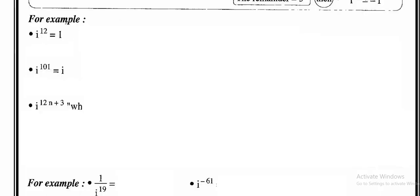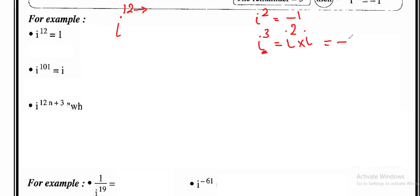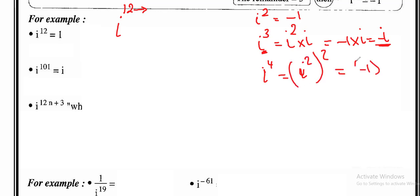If I have i¹². What is i¹² equal to? The first thing I will reduce the power number in multiples of 4. Why? Because i² = -1. If I want to find i³, it will be i² × i. Since i² = -1, then -1 × i = -i, so i³ = -i. For i⁴ = (i²)² = (-1)² = 1. So my rule here: i⁴ = 1.